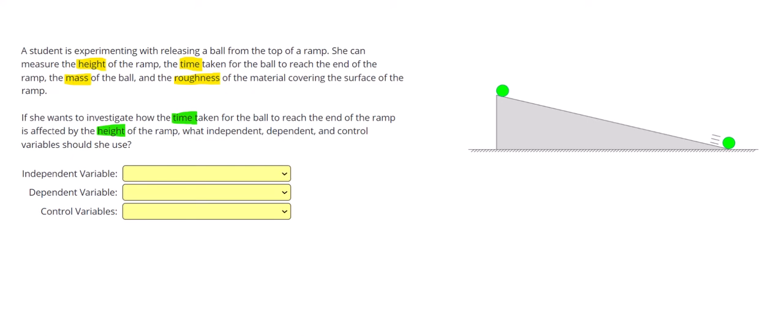So those last two that I put down, the height and the time, those are going to be our independent and dependent variables because that's the relationship that we're studying. So then we have to say, the independent one is the one that the researcher can set, and the dependent variable is the one that she's going to record.